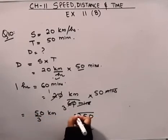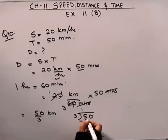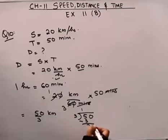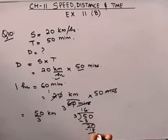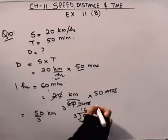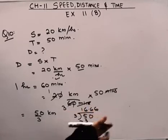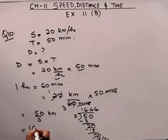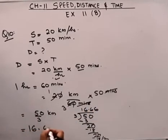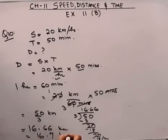If I divide it further: 3 goes into 5 once, that's 3. This equals 2. 3 sixes are 18, we get 2 here. Decimal, 0. Again, 3 sixes are 18, we get 2 here. It will be 16.66. This can be written as 16.66 km or 16.7 km.